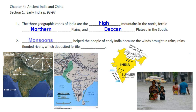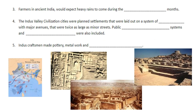Number two, monsoons helped the people of early India because the winds brought in rains and the rains flooded the rivers, which deposited fertile silt for farmers to plant their crops in. Farmers in ancient India would expect heavy rains to come during the summer months.